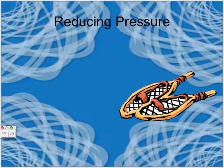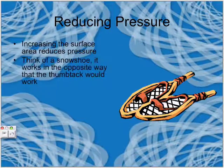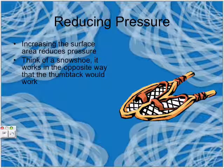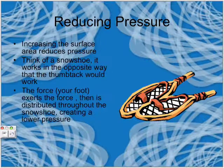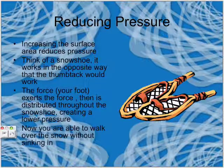Reducing pressure. Increasing the surface area reduces pressure. Think of a snowshoe — it works in the opposite way that the thumbtack would work. The force your foot exerts is then distributed throughout the snowshoe, creating a lower pressure. Now you are able to walk over the snow without sticking in.